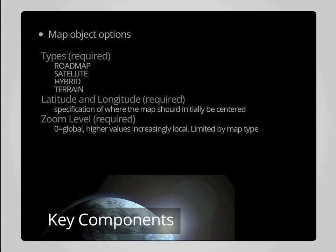You are also required to provide a latitude and longitude that defines where the map should be centered when it loads. You can use this to move the map over your particular area of interest. Finally, you're required to provide a zoom level, which defines how near or far from that latitude and longitude the initial map image is displayed. A zoom level of zero is a global scale map, with higher values providing increasingly local views centered on the latitude and longitude provided.